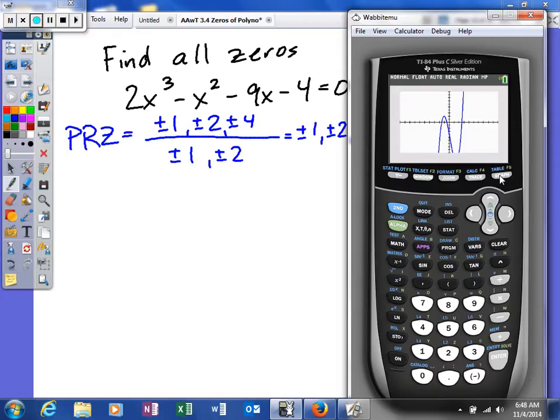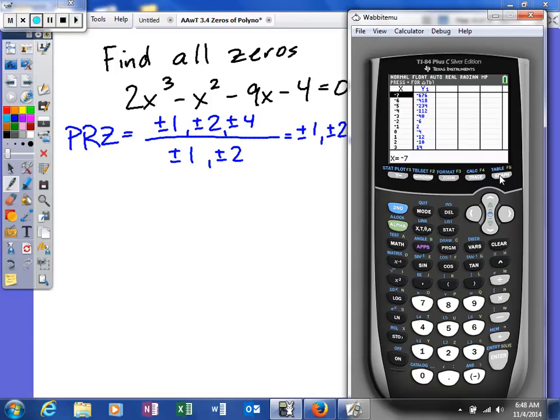So, what we're going to do is we're going to go second graph and look at our table just to make sure. So, in between negative 2 and negative 1, you should see there's a sign change. And that's going to tell us that there's a zero. There's one between negative 1 and 0. And if you look, there's one between 2 and 3.